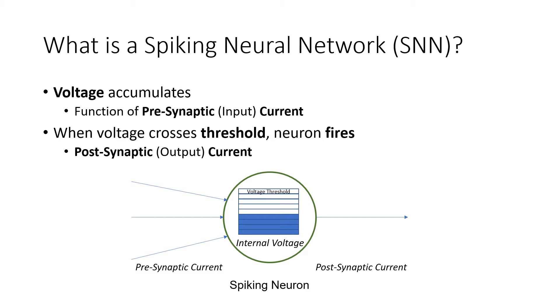Here you can see kind of an internal graphic. In a spiking neuron, voltage accumulates in the middle there, an internal voltage, which is a function of the presynaptic current. Presynaptic meaning before the neuron basically.